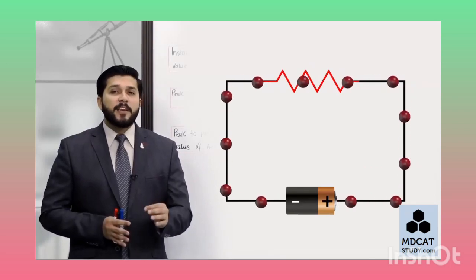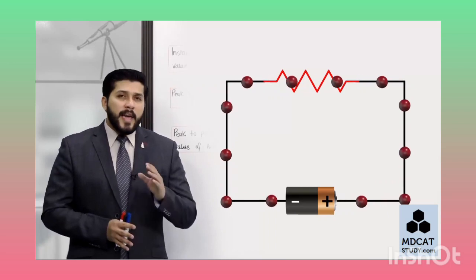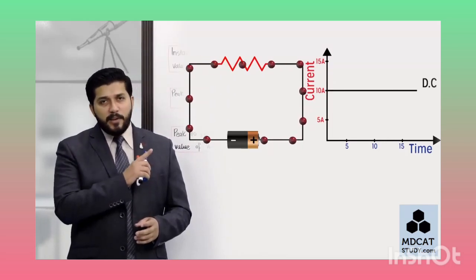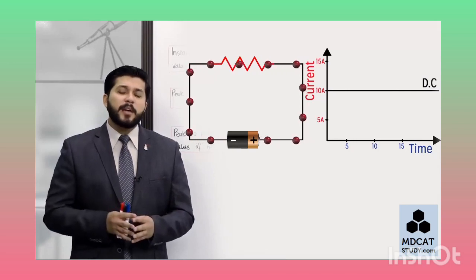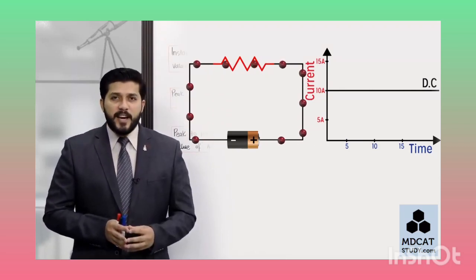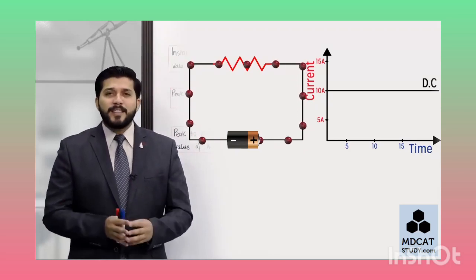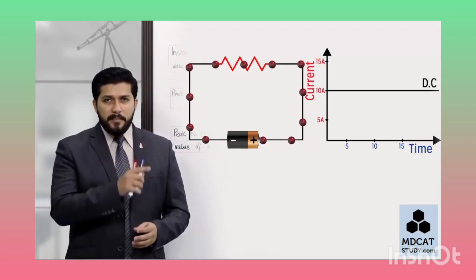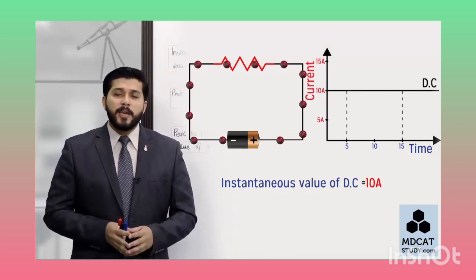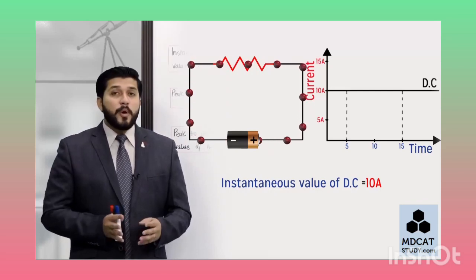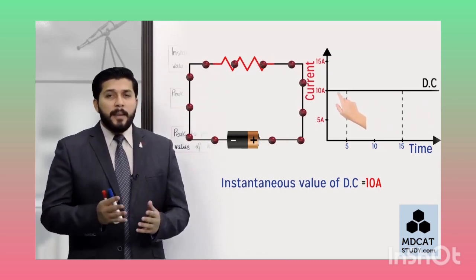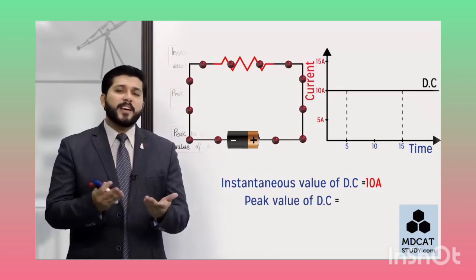Charges کے flow میں خاص بات یہ ہے کہ یہ constant speed سے move کرتے رہتے ہیں، یعنی یہ current ایک steady یا constant value ہے۔ ایسے current کا graph time کے لحاظ سے دیکھیں تو current کی value change نہیں ہوتی - اگر 10A ہے تو 10A ہی رہے گا۔ اس graph میں اگر instantaneous value of DC پوچھیں تو جس لمحے بھی دیکھیں، 10A ہے۔ اسی طرح peak current یعنی maximum current بھی 10A ہے۔